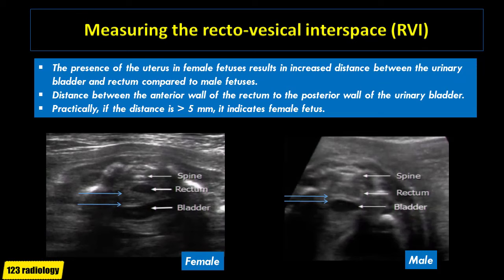Measurement of recto-vesical interspace: the presence of the uterus in female fetuses results in increased distance between the urinary bladder and rectum compared to male fetuses. Measuring this distance between the posterior wall of the bladder and the anterior wall of the rectum allows determination of fetal sex correctly between 14 and 40 weeks of gestation. The recto-vesical interspace is measured in the axial plane at the level of the umbilical arteries at mid-urinary bladder. Practically, if the distance is greater than 5 mm, it indicates a female fetus. The recto-vesical interspace in the female fetus is much greater than in the male fetus.